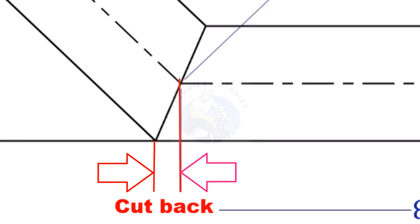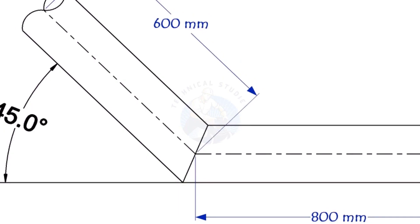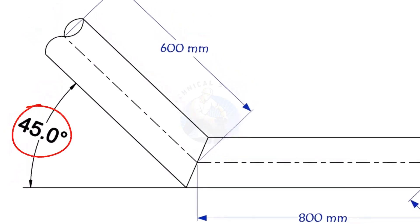To mark a miter cut, we need to know the cutback of the miter. In this offset, the nominal diameter NB of the pipe is 6 inch. The angle of the miter is 45 degree.